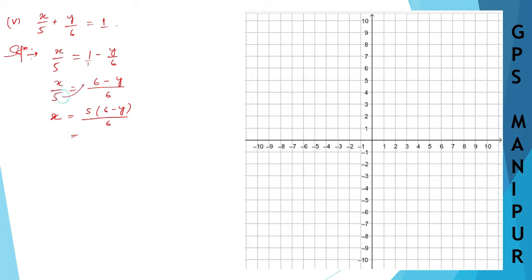Now x by 5 transfer that side, so it will be 5 into 6 minus y divided by 6. So 5 you are multiplying here, which is 30 minus 5y divided by 6. Now let us calculate, let us make the table for this one.